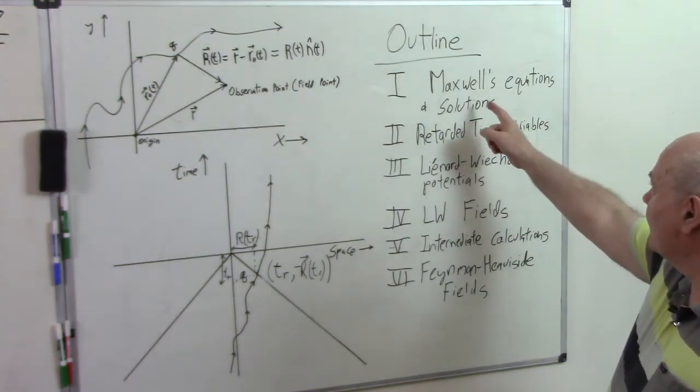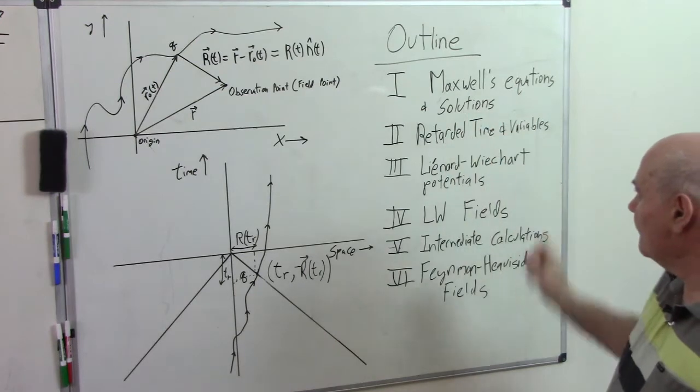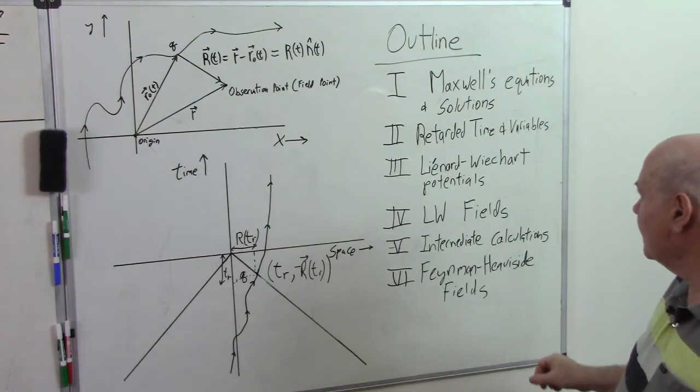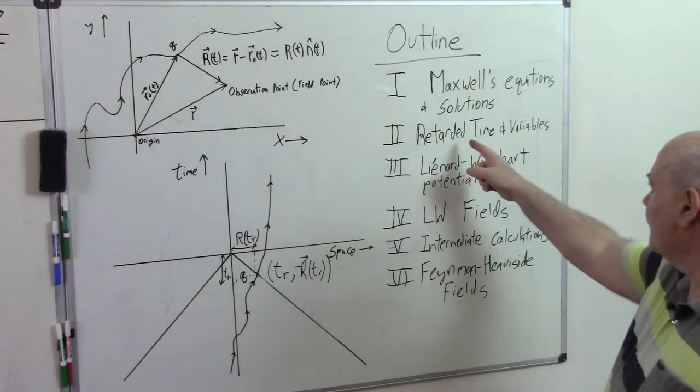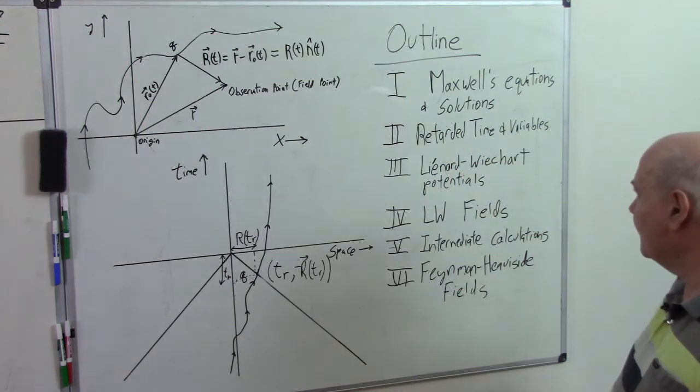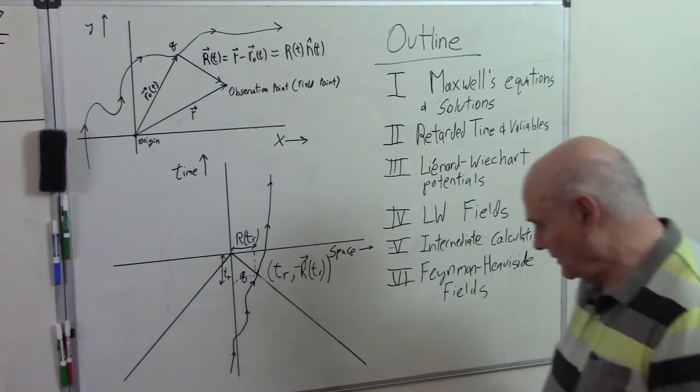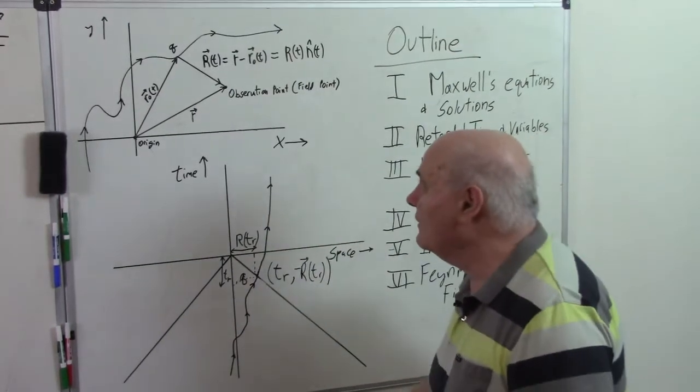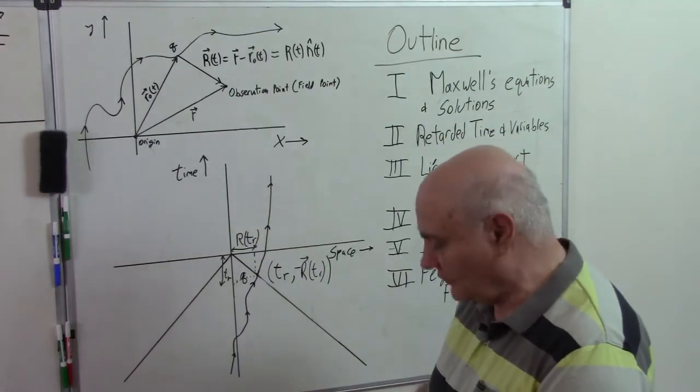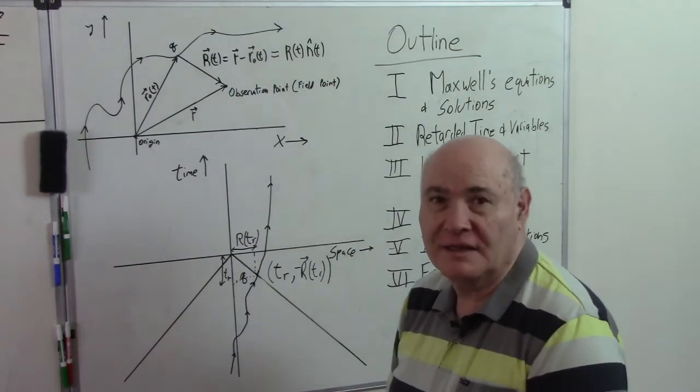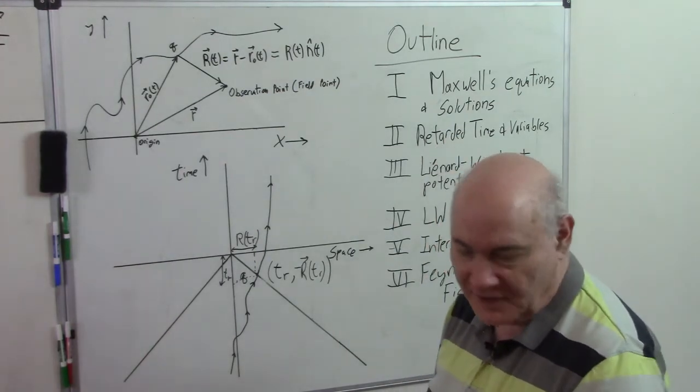So last time we discussed Maxwell's equations and solutions, and I've already erased them. And this time I'll talk about some notation and retarded time and variables. So in the general situation it can get a little confusing, but this is the notation I'm using from the book by Zangwill.